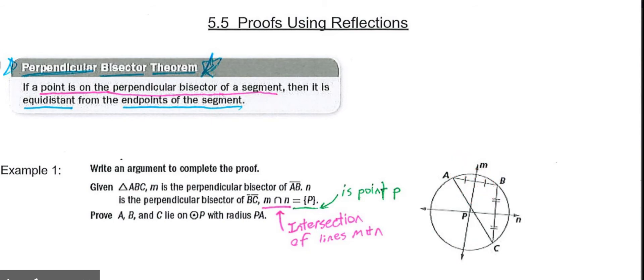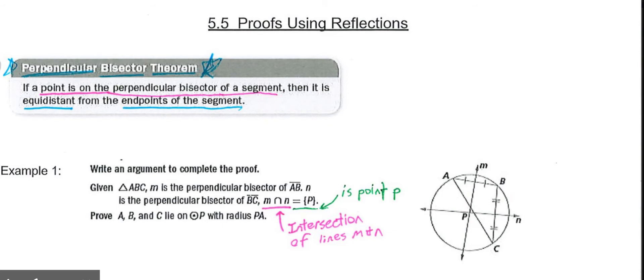then I would know point P, which is on line M, is equidistant, so the same distance from A as it is from B. So anything along a perpendicular bisector, any point on line M, would be the same distance from A and B, the endpoints of the segment that it bisects. Same thing here, if line N is the perpendicular bisector of segment BC, any point on line N would be the same distance from B as it is to C.